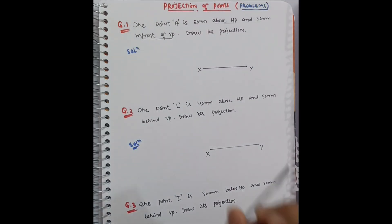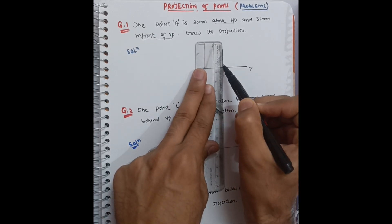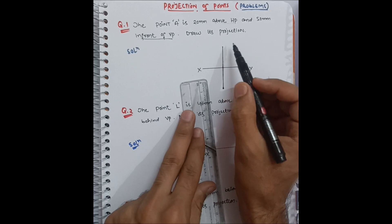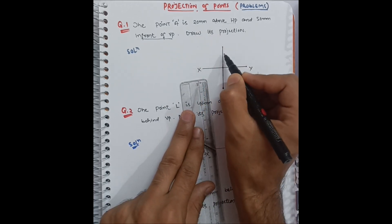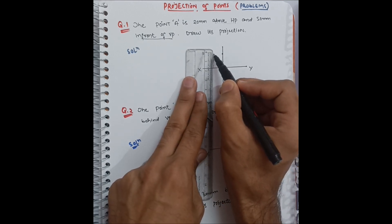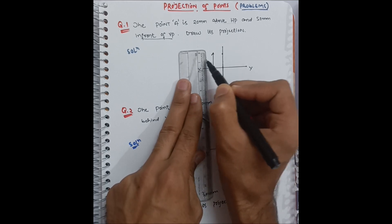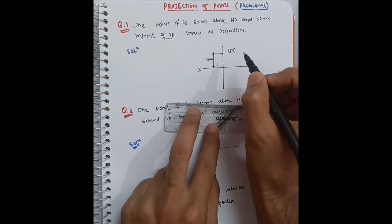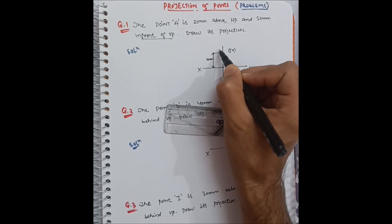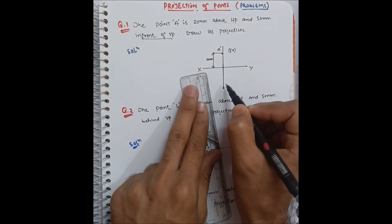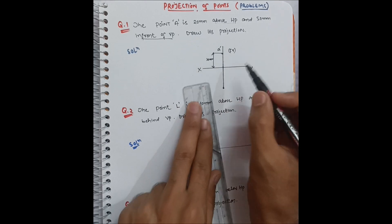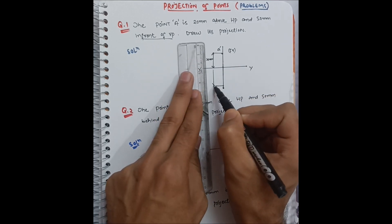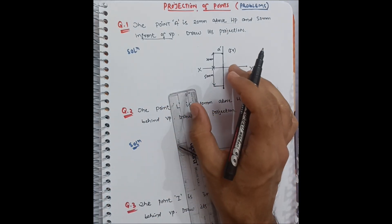Now let me draw it. The front view will be on the upper side. You project this line downwards to make the top view. The point is 20mm above HP, so the front view — denoted by a dash, called A dash — is at 20mm above the reference line. The top view is 50mm in front of VP, so it will be 50mm below the reference line.